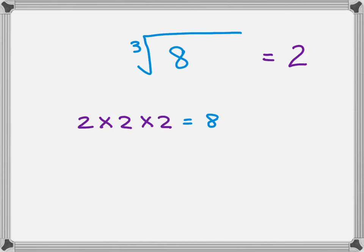So whatever the cube root answer is for the number on the inside, it's the number multiplied by itself three times.